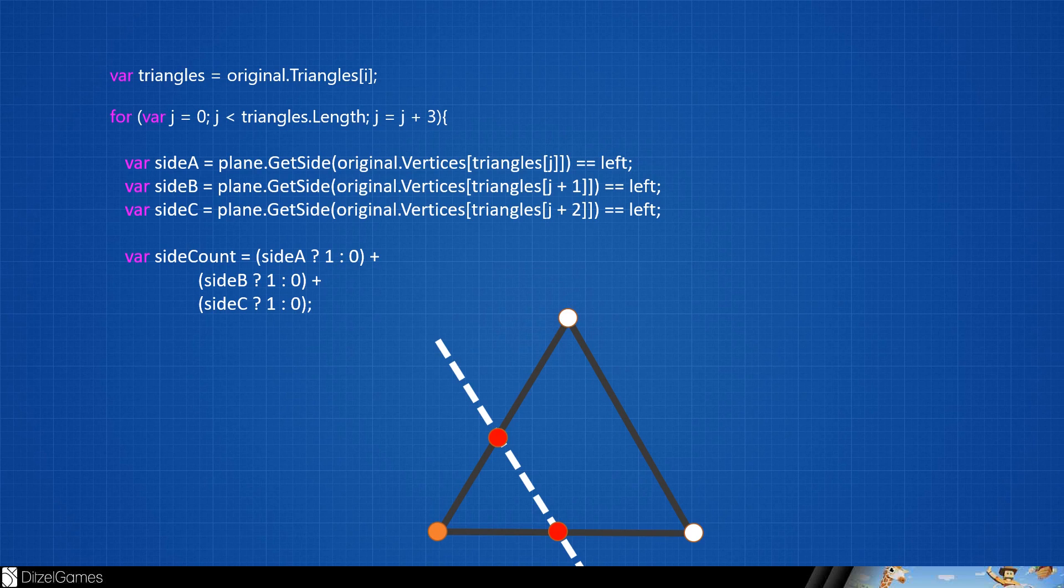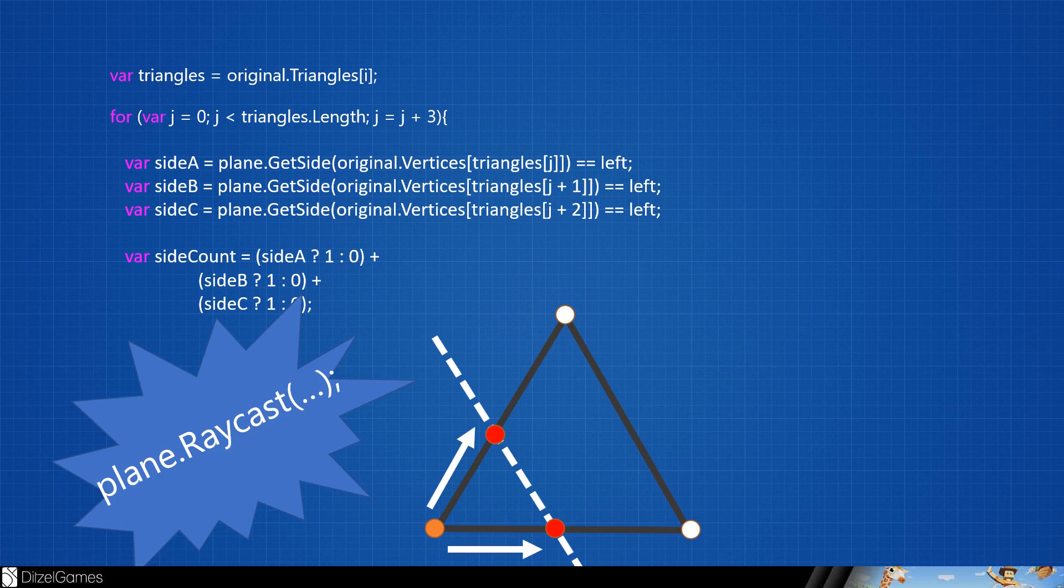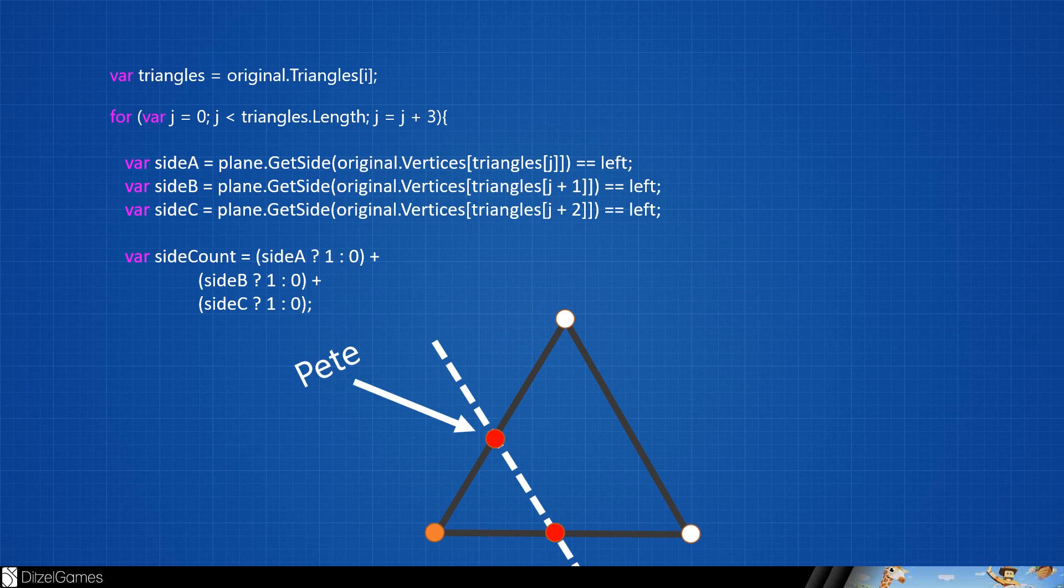Else calculate the cut points. How? Use plane.Raycast. Remember the first calculated vertex within the whole process. Name it Pete. We need them later.